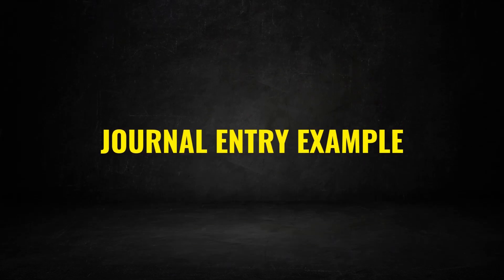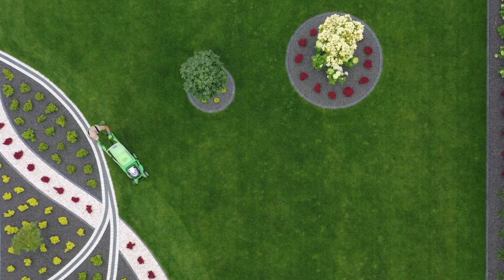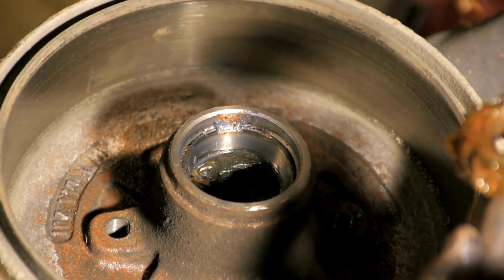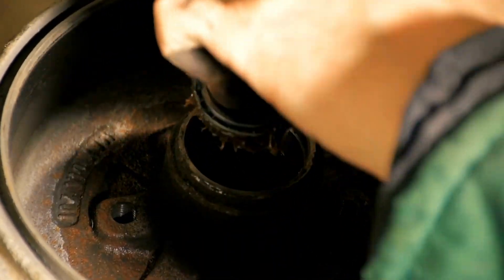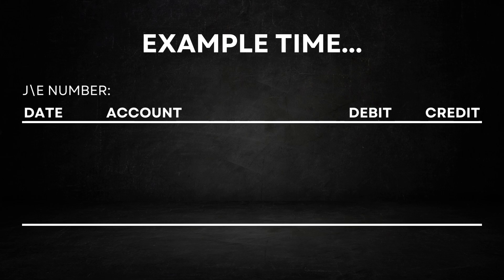Now let's dive into an example to put these concepts into practice. In my previous video, I started my own landscaping and lawn care business, which has been running successfully for a week. However, my equipment has become faulty and needs repair. I take it to the repair shop and they charge me $20, which I pay in cash. First, we need a unique journal entry number to identify this transaction. Since we discussed our first five transactions in a previous video, we'll label this one as number 6.